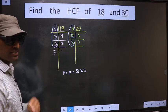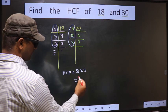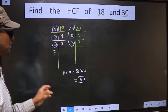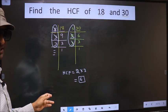Therefore our HCF is 2×3, 6 is our HCF. Am I clear?